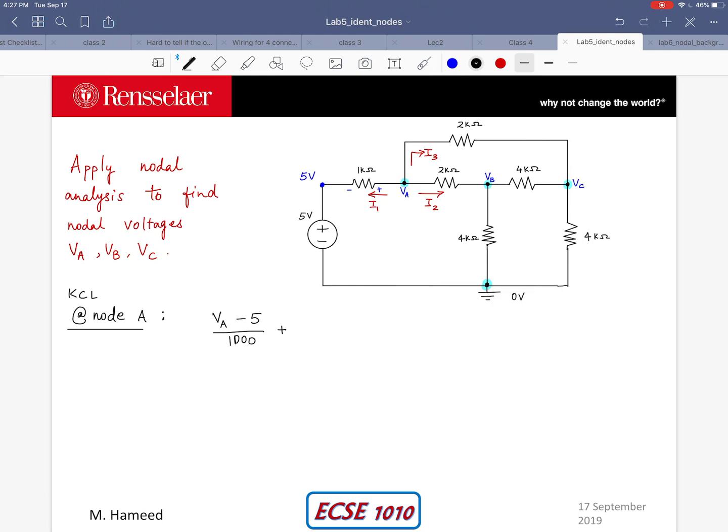Next I need I2, which is going to be VA minus VB divided by 2000. Then I have I3, which is VA minus VC divided by 2000 again and that equals 0. Sum of all the currents leaving the node equals 0.